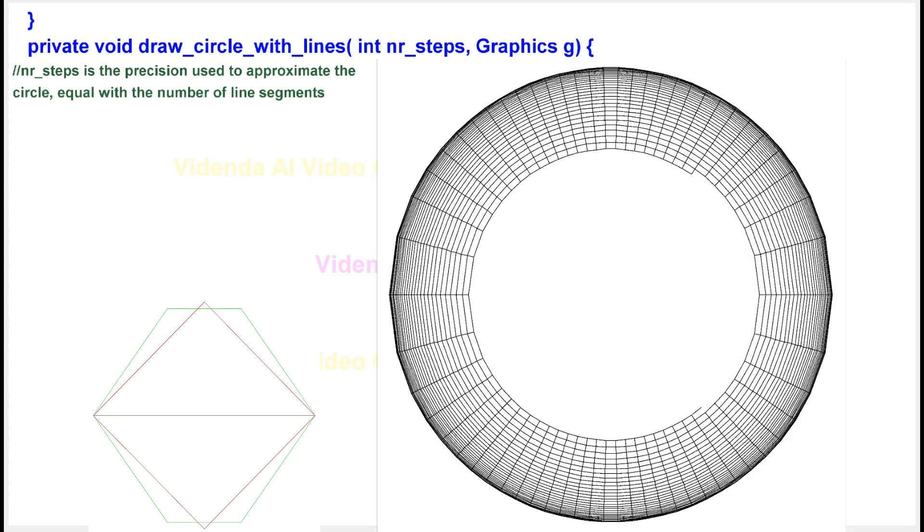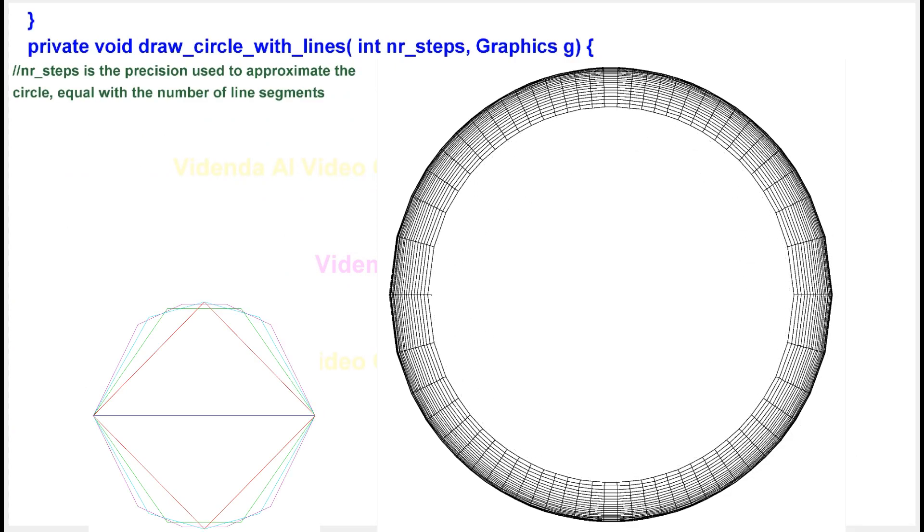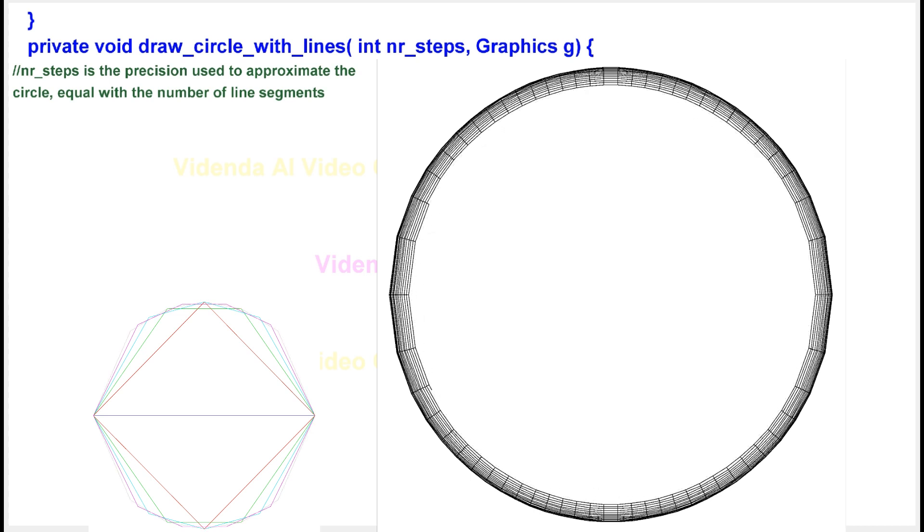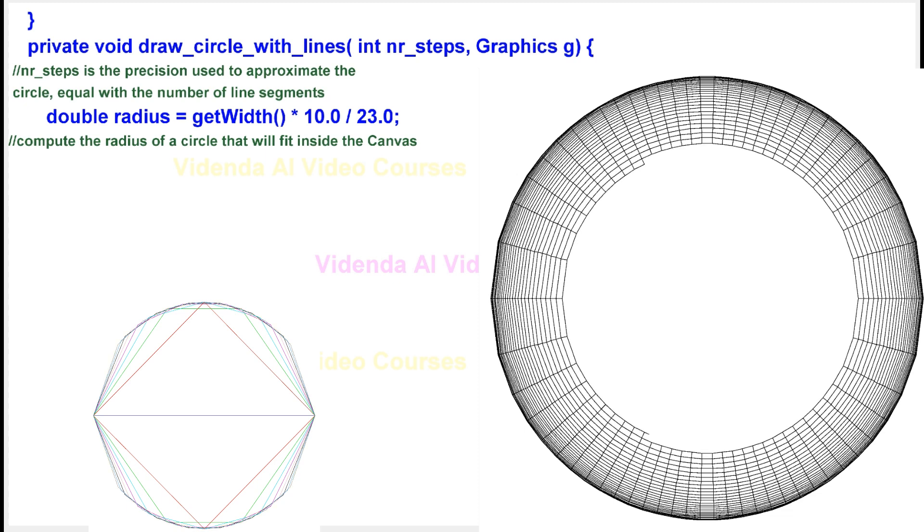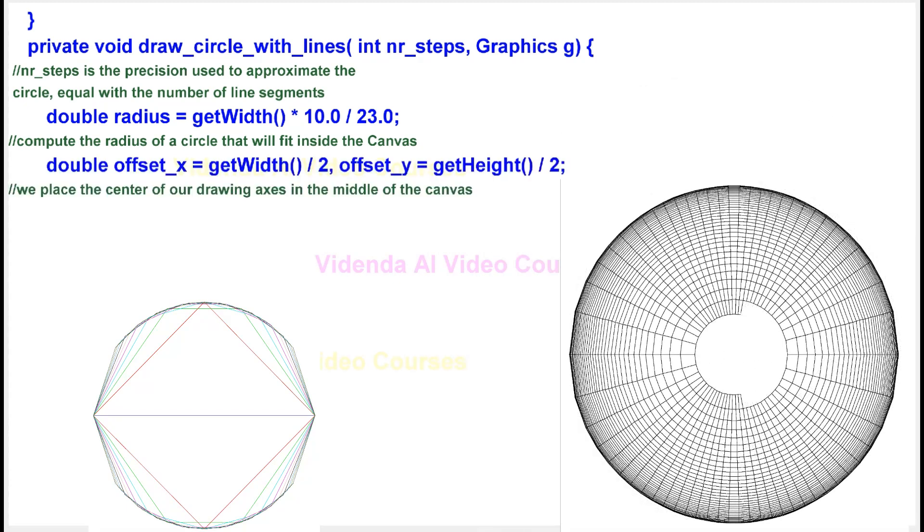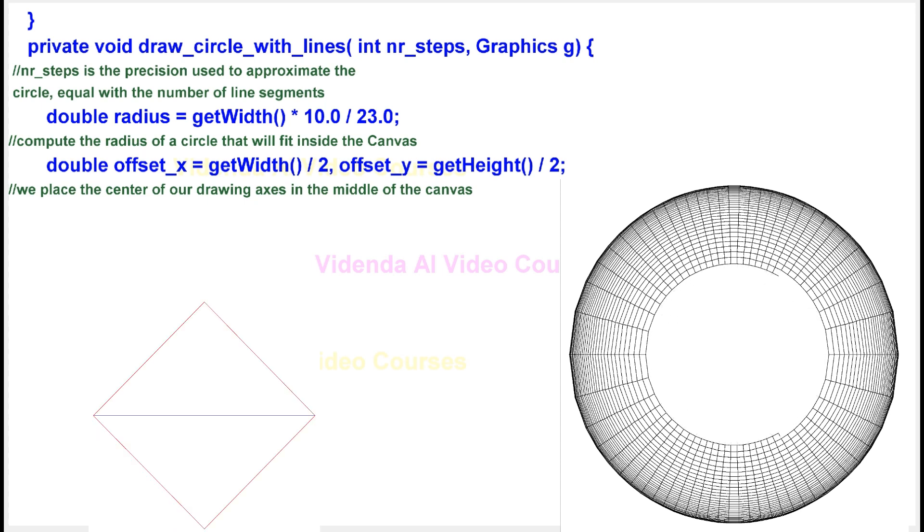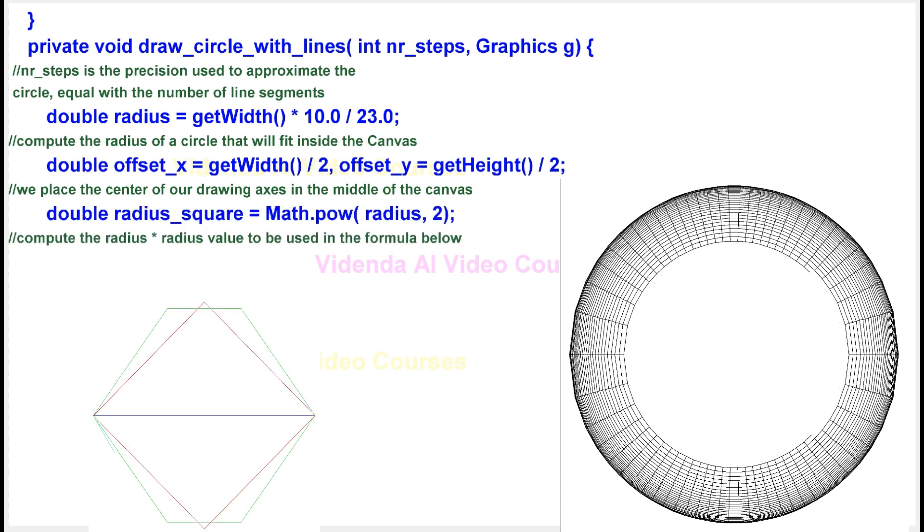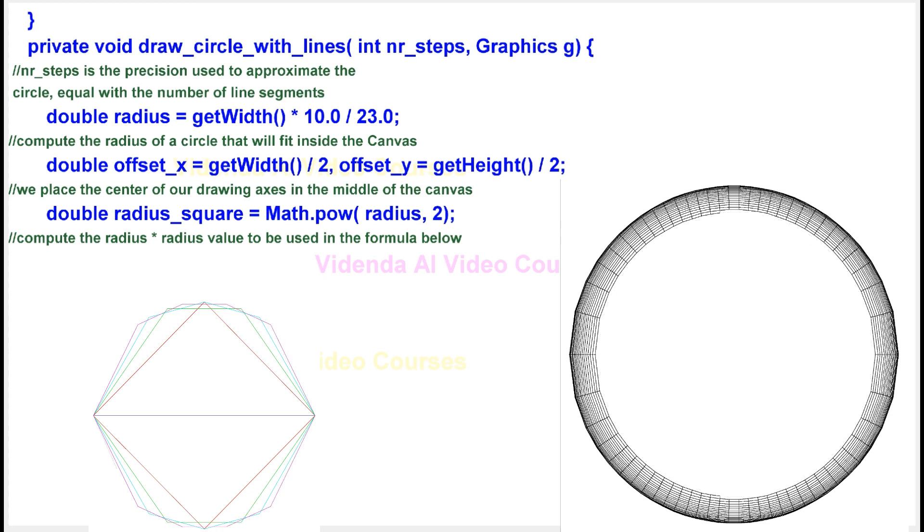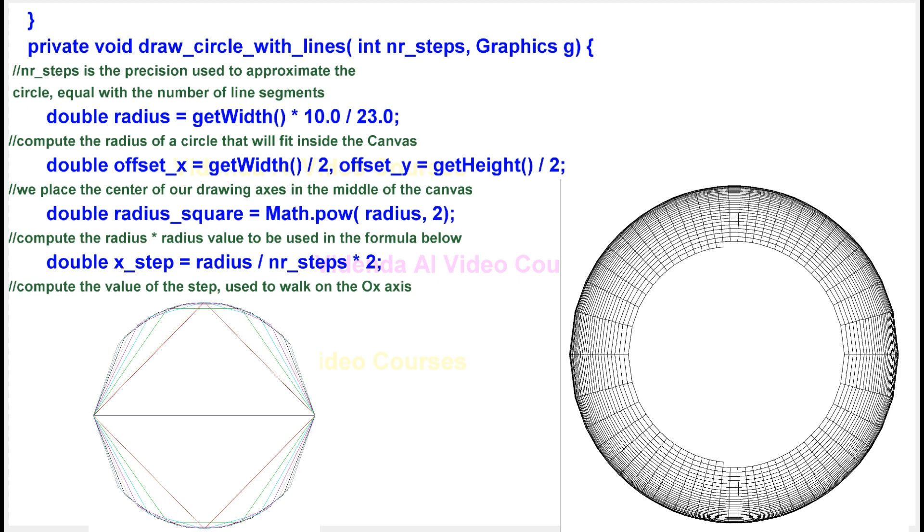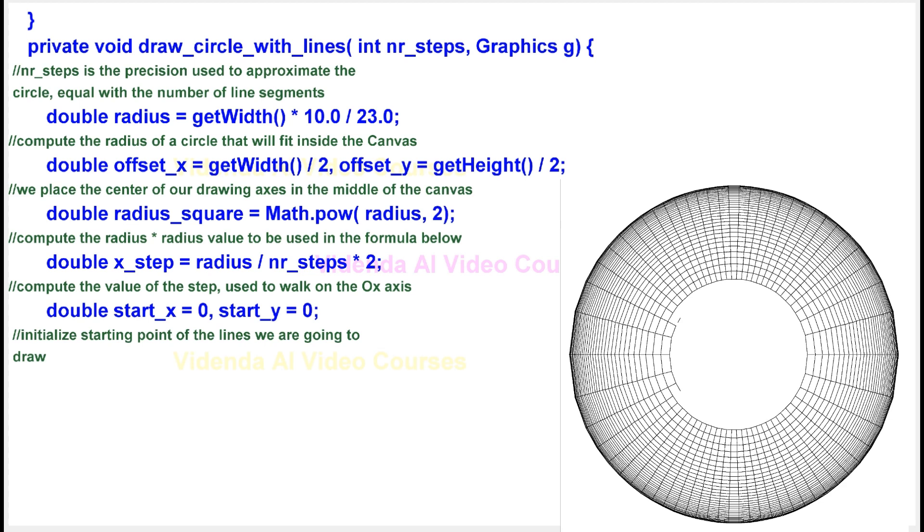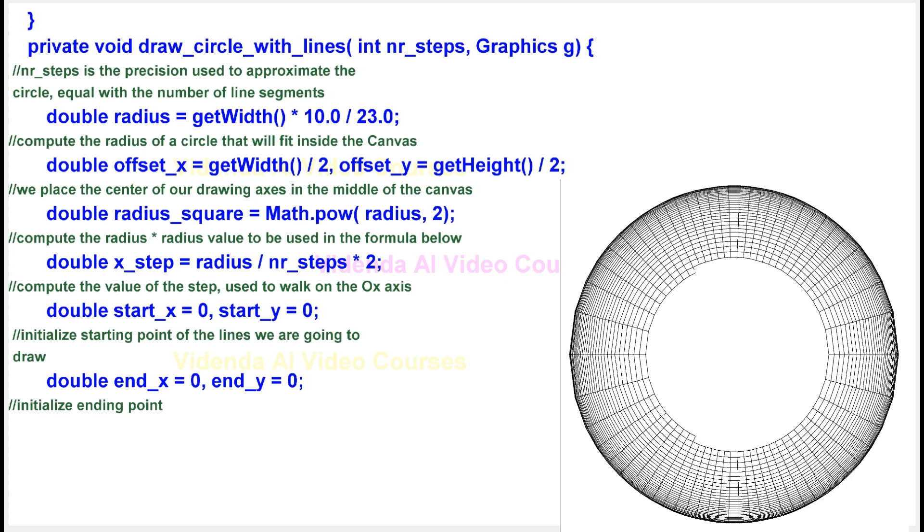nr_steps is the precision used to approximate the circle, equal with the number of line segments. Compute the radius of a circle that will fit inside the canvas. We place the center of our drawing axes in the middle of the canvas. Compute the radius*radius value to be used in the formula below. Compute the value of the step used to walk on the aux axis. Initialize starting point of the lines we are going to draw. Initialize ending point.